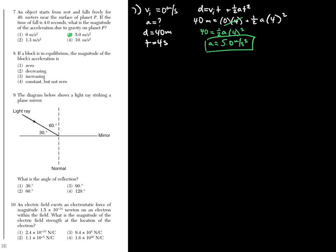Number eight has a block in equilibrium, meaning all forces are equal and balanced, so the net force is zero newtons. When the net force is zero, we have no acceleration — that's what it means to be in equilibrium: absolutely zero acceleration.